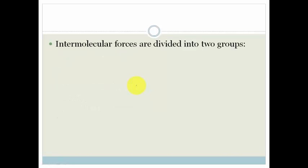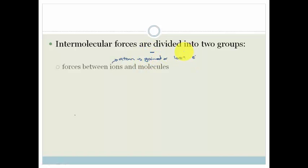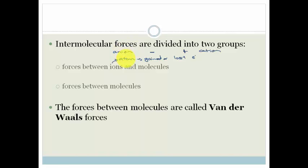There are two types of intermolecular forces. First, you get forces between ions and dipoles. An ion is an atom that has either gained or lost an electron. If it has gained an electron, it's a negative ion — an anion. If it has lost an electron, it's a positive ion — a cation. The second type of intermolecular force is forces between molecules, and these are called van der Waals forces.